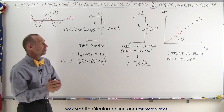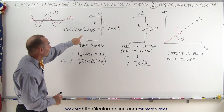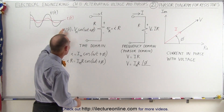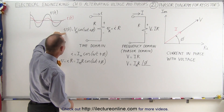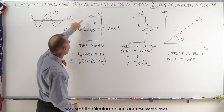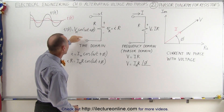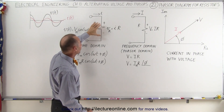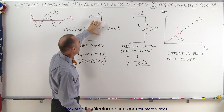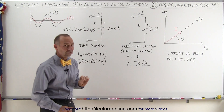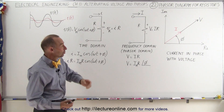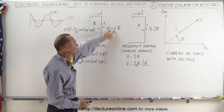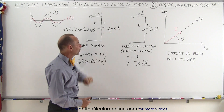We're going to keep things very simple and just consider a single resistor. We have a time-varying voltage applied across the terminals of the resistor, which forces a current through it, and we'll have a voltage drop across the resistor equal to the current times the resistance.